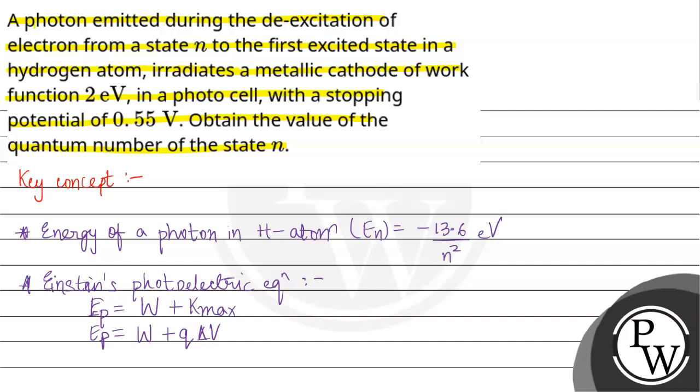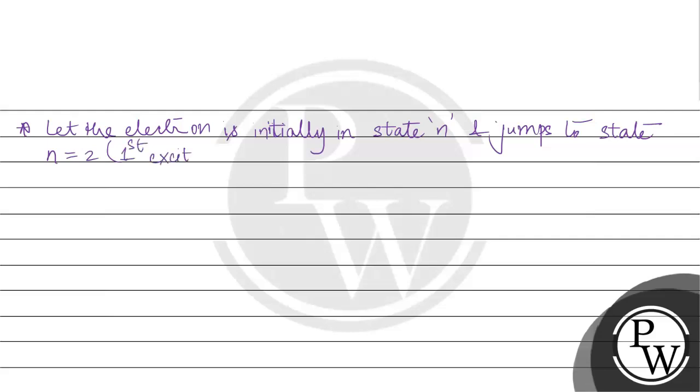With the help of this key concept we will proceed further. The electron is initially in state n and jumps to state n = 2, the first excited state.